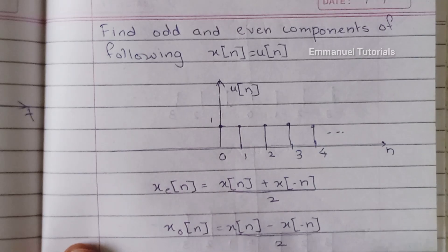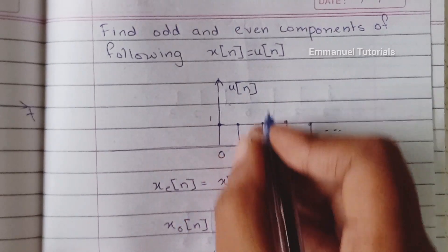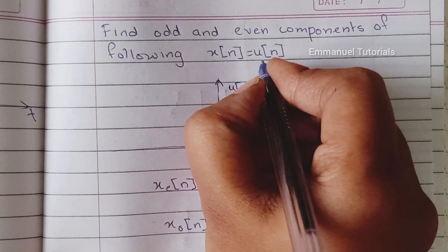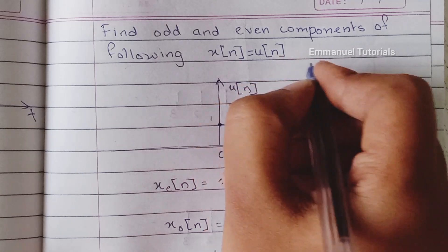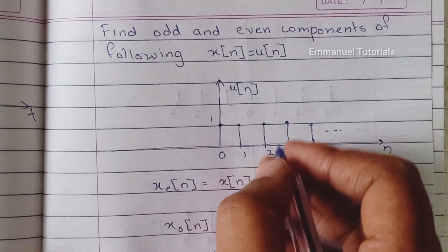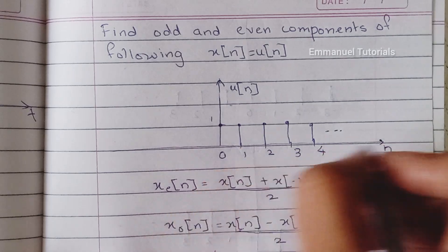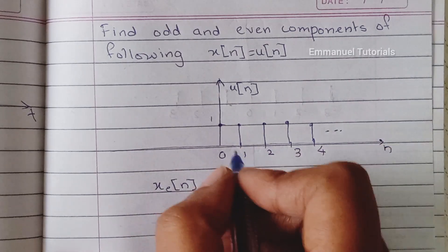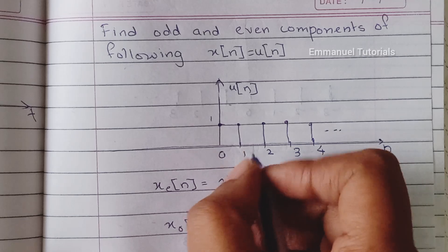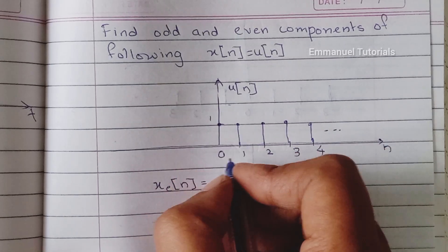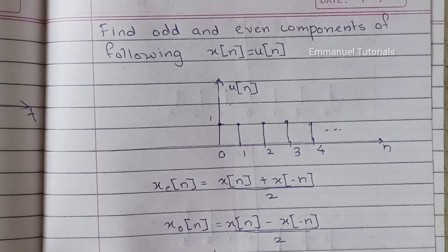Let's start. This is a discrete time signal example. The signal we have is u(n), which is the unit step signal. The unit step signal starts from n equal to 0 and ends at n equal to infinity, and it has amplitude 1 at each point: at 0 it will be 1, at 1 it will be 1, at 2 it will be 1, and so on.